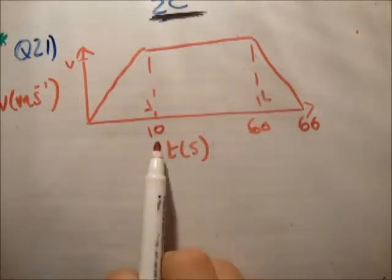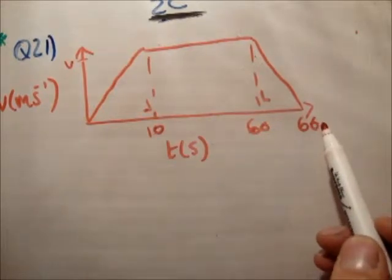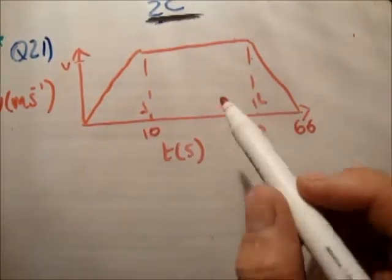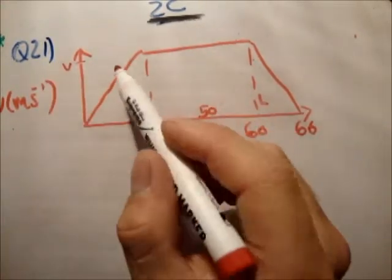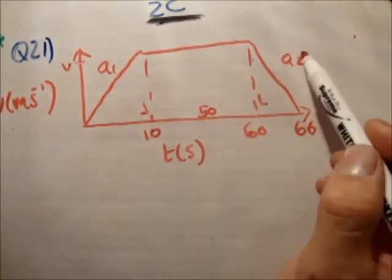So there is my speed time diagram as normal. I've marked in the positions, 10 seconds, total time is 66. We know from here to here is 6, there from here to here is 50 seconds, and that point is 60. We're given a maximum speed of V and accelerations A1 and A2.